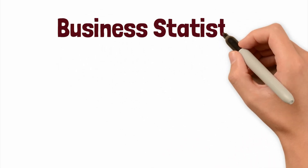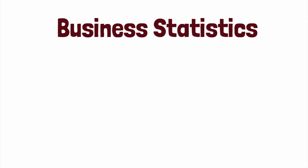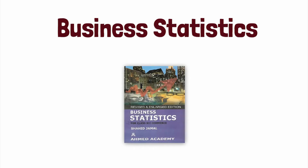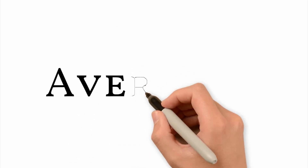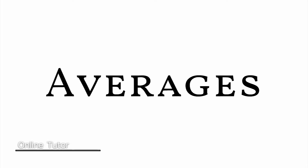Welcome to Secondary Commerce and Business Statistics. We are reading chapter number 4, which is about averages. Before, we talked about the arithmetic mean, and we saw how to find the arithmetic mean for ungrouped data.